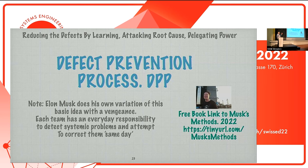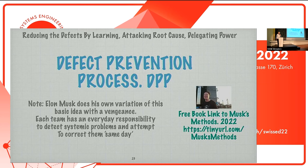My good friend Elon does this with a vengeance. He tells his teams at Tesla and SpaceX: every day I want you to think about two things when you're doing your work. Number one, can we improve the product in any way? If yes, do it now today — you have the money and the power. And your work process: if you can think of any improvement at all, do it now as a team. Daily, numeric improvement of process and product, supported by the power to make the change at the local team level. That's what Musk does.